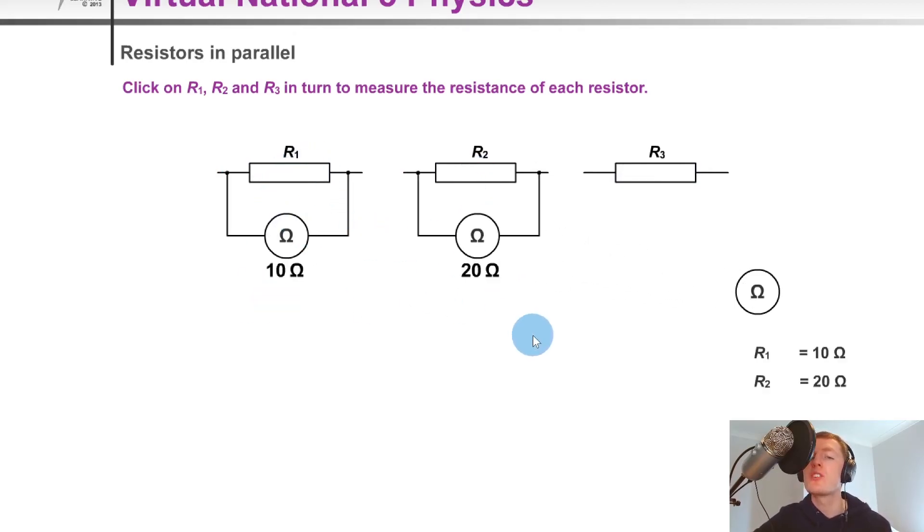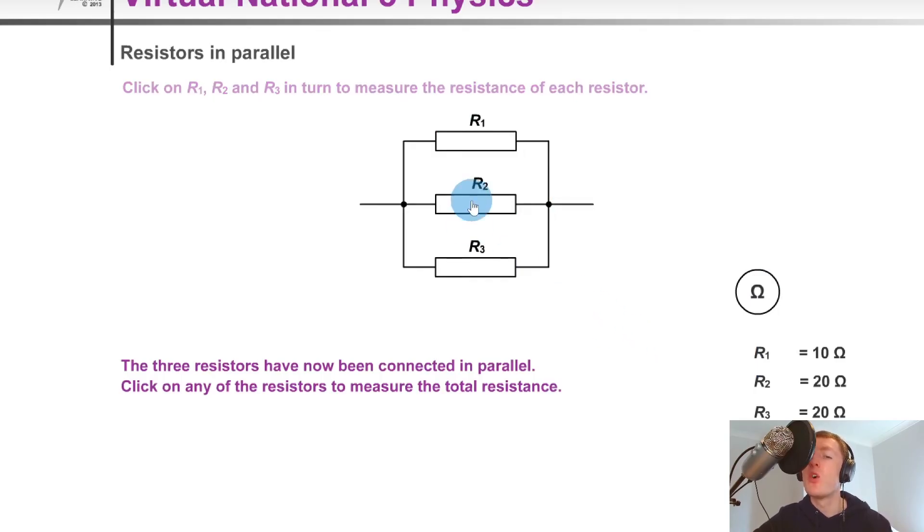Let's say I measure R2 to be 20 ohms, and R3 to be 20 ohms as well. Then what we could do here is in order to find the total resistance, we could add them in parallel, but we need to use the inverse relationship. So if we do that, this is the same as taking an ohmmeter and measuring the total resistance across this whole combination in parallel.